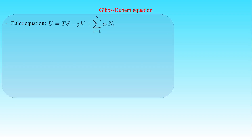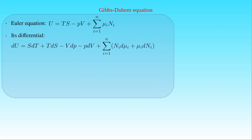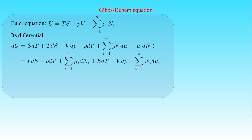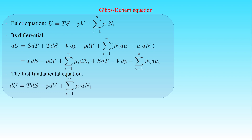Such an expression derived by combining the fundamental equations and Euler integrals is the Gibbs-Duhem equation, which we derive from the Euler equation and the first fundamental equation. The Euler equation states that U equals T times S minus P times V plus the sum of μᵢ times Nᵢ. Computing the differential gives dU equals S dT plus T dS minus V dP minus P dV plus the sum of Nᵢ dμᵢ plus μᵢ dNᵢ. Reordering, we have T dS minus P dV plus the sum of μᵢ dNᵢ, plus S dT minus V dP plus the sum of Nᵢ dμᵢ. The first fundamental equation states dU equals T dS minus P dV plus the sum of μᵢ dNᵢ.